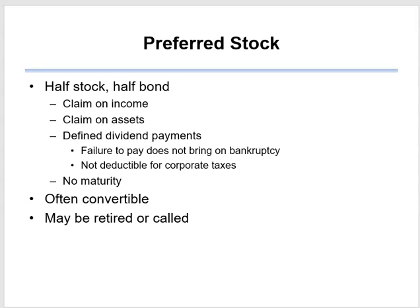There's no maturity date on preferred stock. So if you think about it, preferred stock is really a cross between bonds and common stock. Preferred stockholders get guaranteed — in quotes — payments, but unlike bonds there's no maturity. Typically, preferred stockholders do not get a say in the running of the business. Preferred stock is often convertible, meaning that under certain conditions you can exchange it for common stock, which gives you more options as an investor.